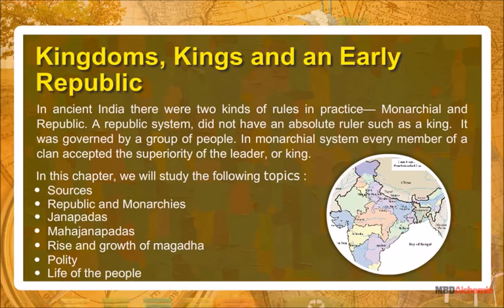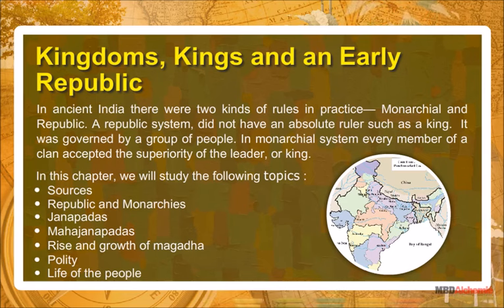In ancient India there were two kinds of rules in practice: monarchial and republic. A republic system did not have an absolute ruler such as a king; it was governed by a group of people. In a monarchial system, every member of a clan accepted the superiority of the leader or king. In this chapter we will study the following topics.